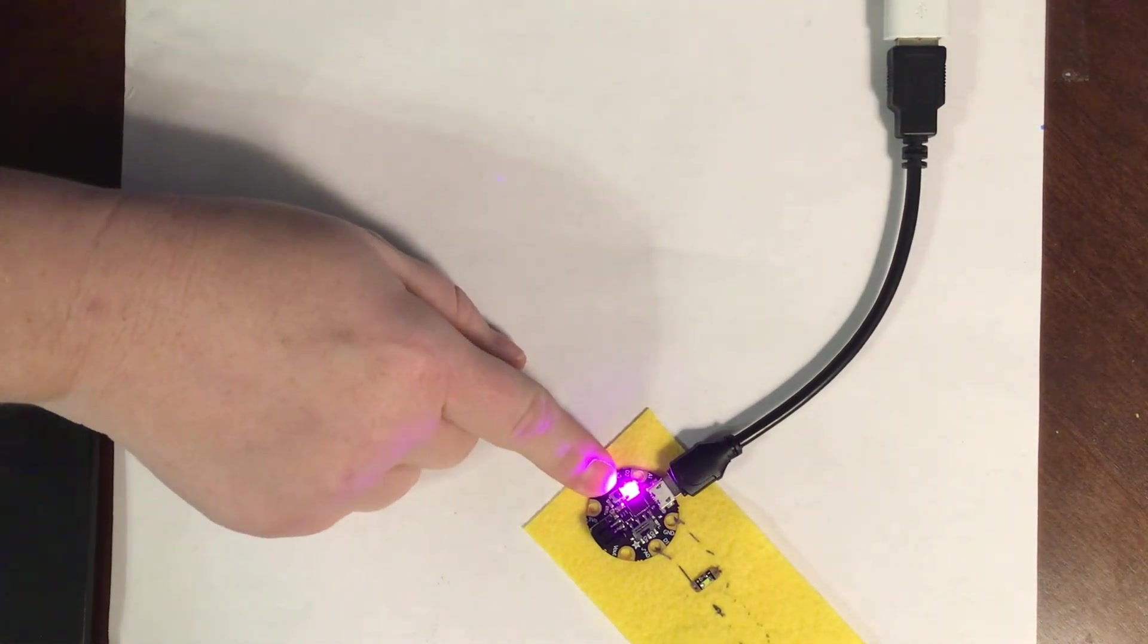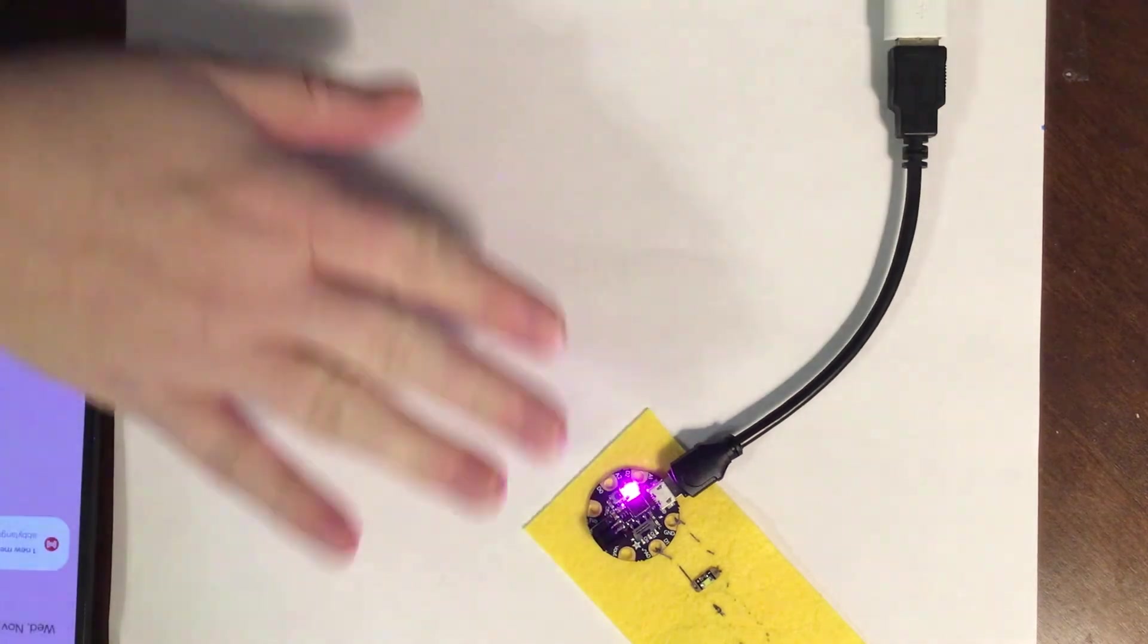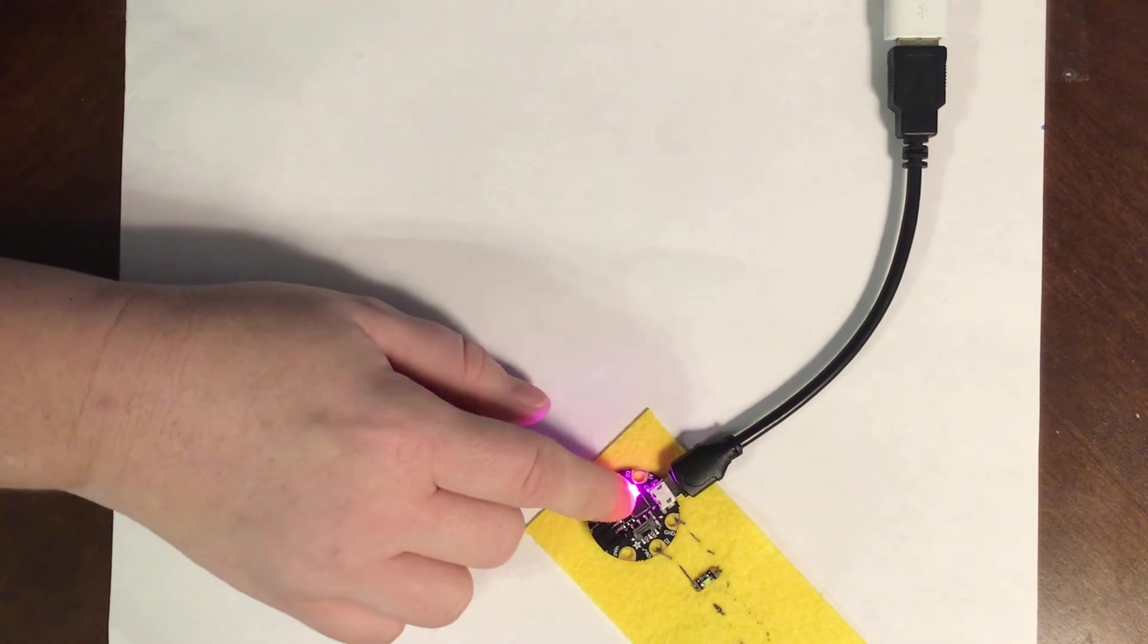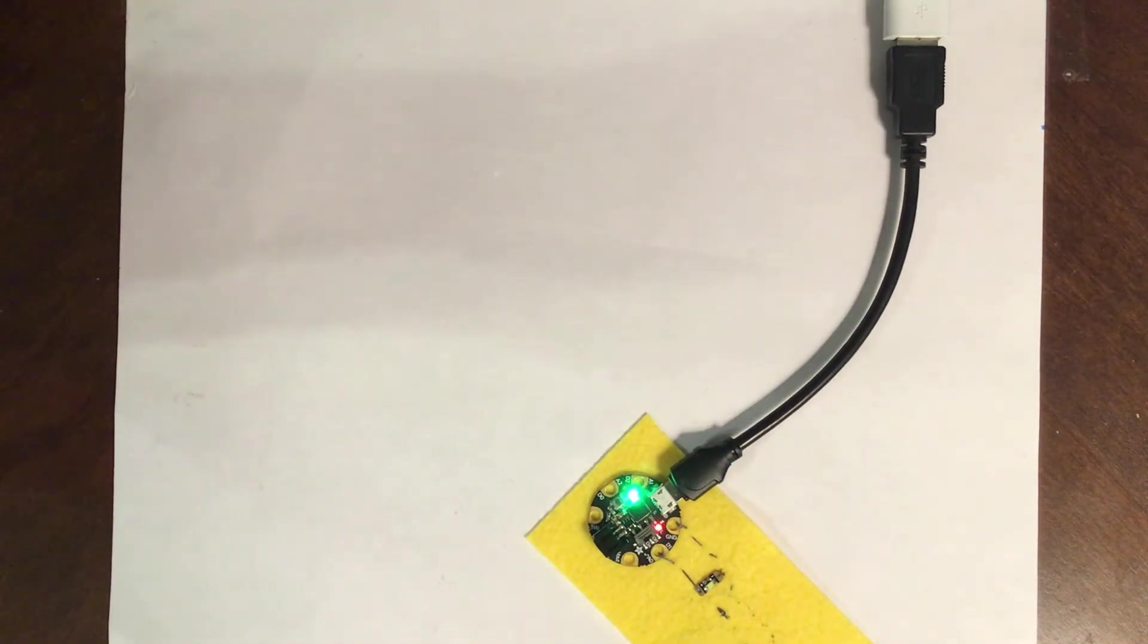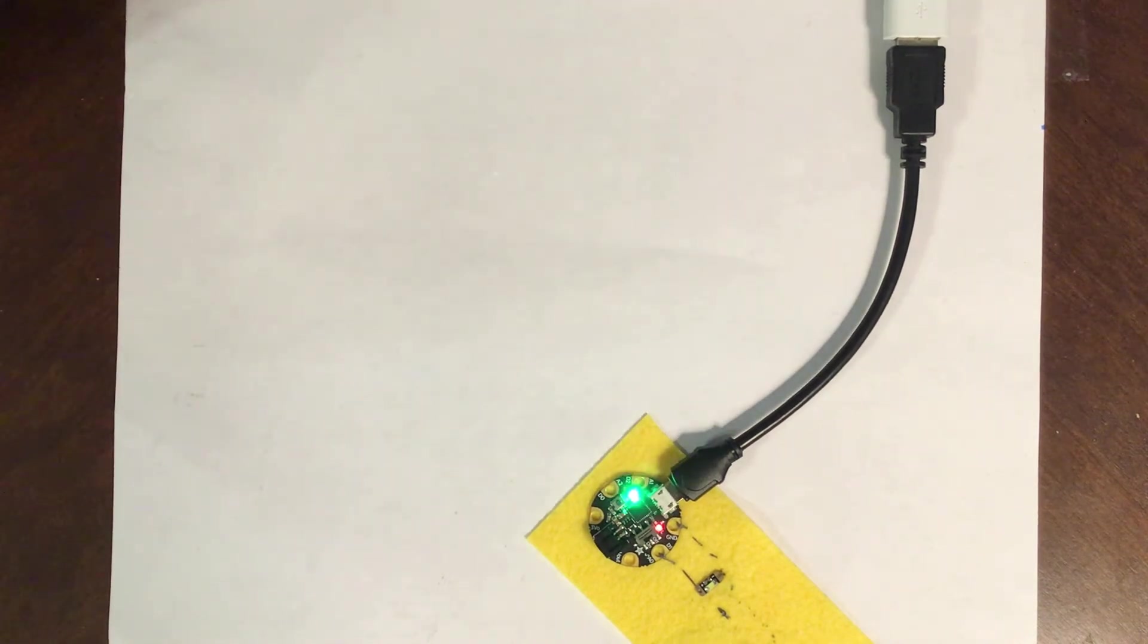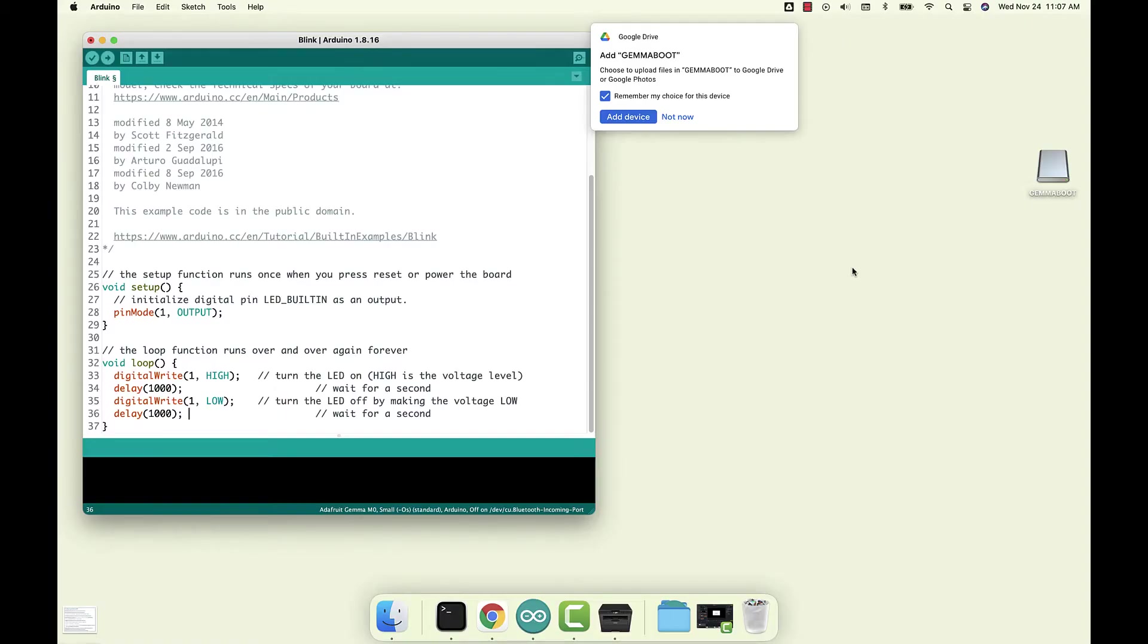Then we need to get this thing ready to accept a program. There's a tiny little button right by that very bright dot star LED. And you have to double tap it. It's kind of a rhythmic double tap. It's not a straight tap tap. It's more like tap tap. So tap tap. And now I know I've done it right, because I have a green light and a red light. And I even have a notice on my screen here that it has found the Gemma bootloader. Windows and Linux might look a little different. But here on my Mac, I've got the Gemma bootloader. So that's a good sign.